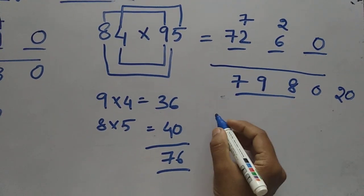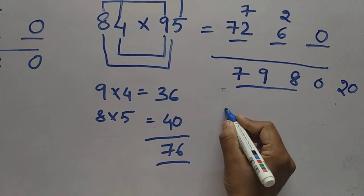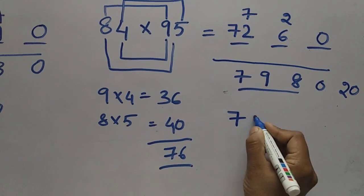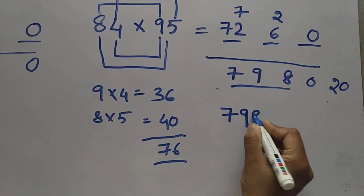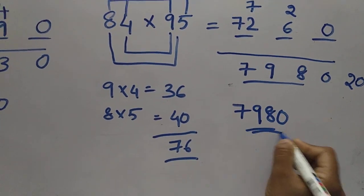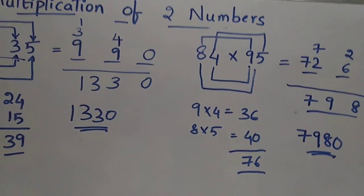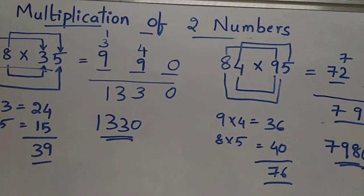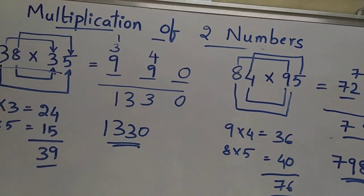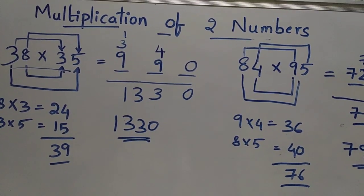For this multiplication of 84 into 95, the answer is 7980. This is a very simple technique to multiply 2 numbers. Thank you.